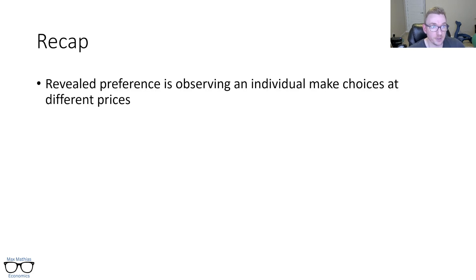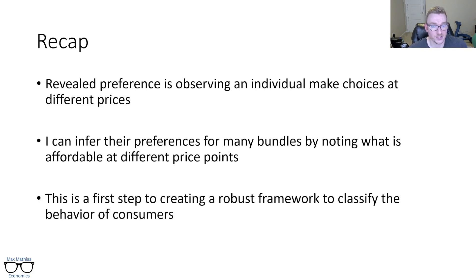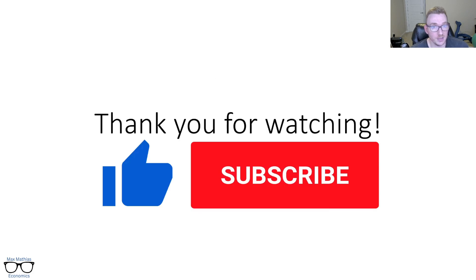So to recap, revealed preference is basically just observing that you will make choices at different prices. I can infer preferences from many bundles by noting what is affordable at different price points and ultimately seeing what you choose. So revealed preference is a first step to creating a robust framework to classify the behavior of consumers. There is more to come on this. We'll talk about it in later videos. But in the meantime, if you got anything out of this video, thank you so much for watching. Please consider liking and subscribing. And I'll see you next time.